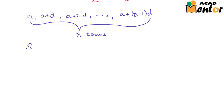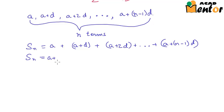Now the sum up to N terms, S would be equal to A plus A plus D plus A plus 2D plus so on up to A plus N minus 1 times D. When you write it in reverse order, S would be equal to A plus N minus 1 into D plus A plus N minus 2 into D plus A plus N minus 3 into D and so on.